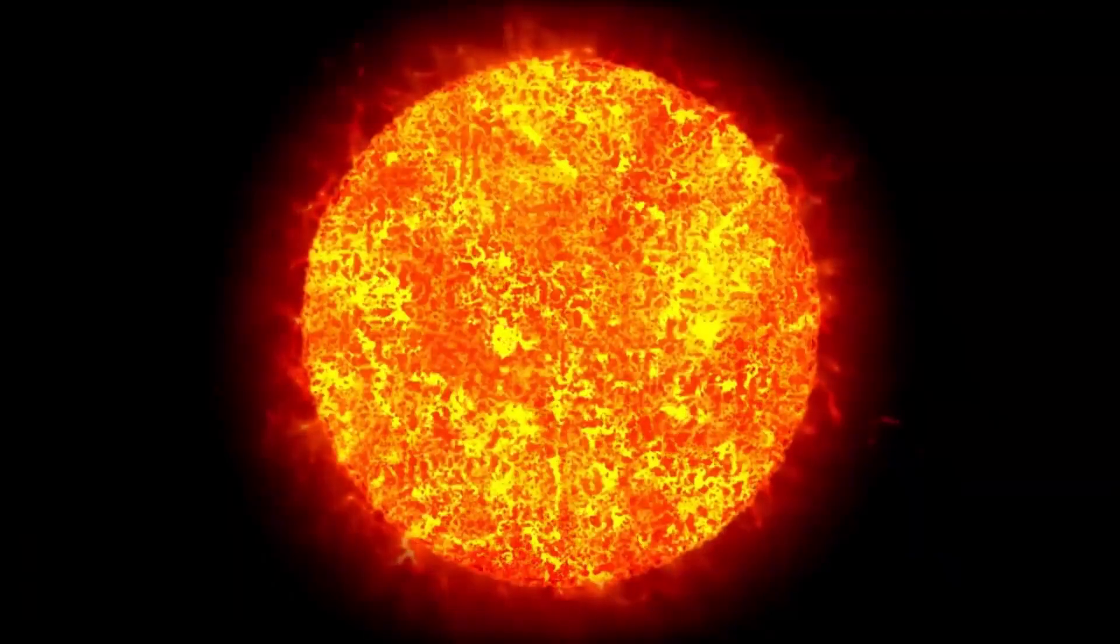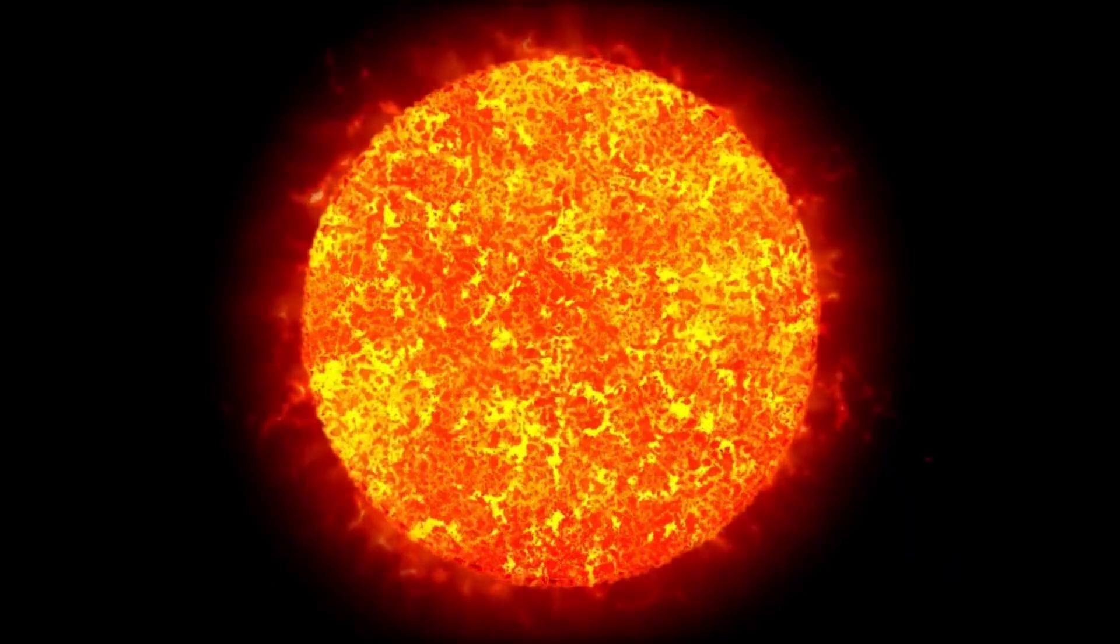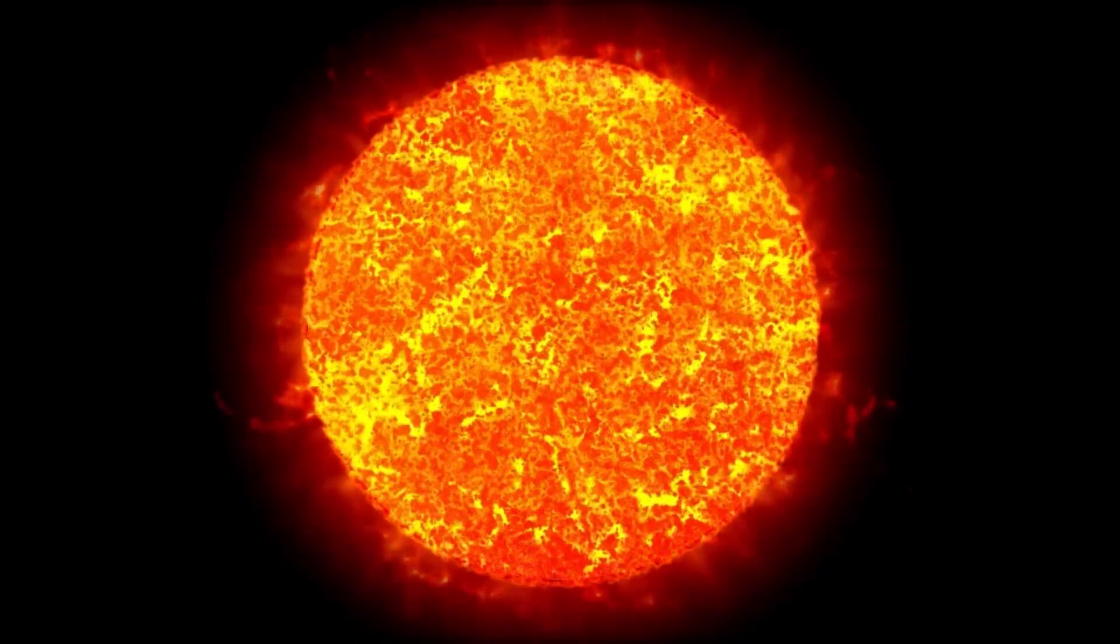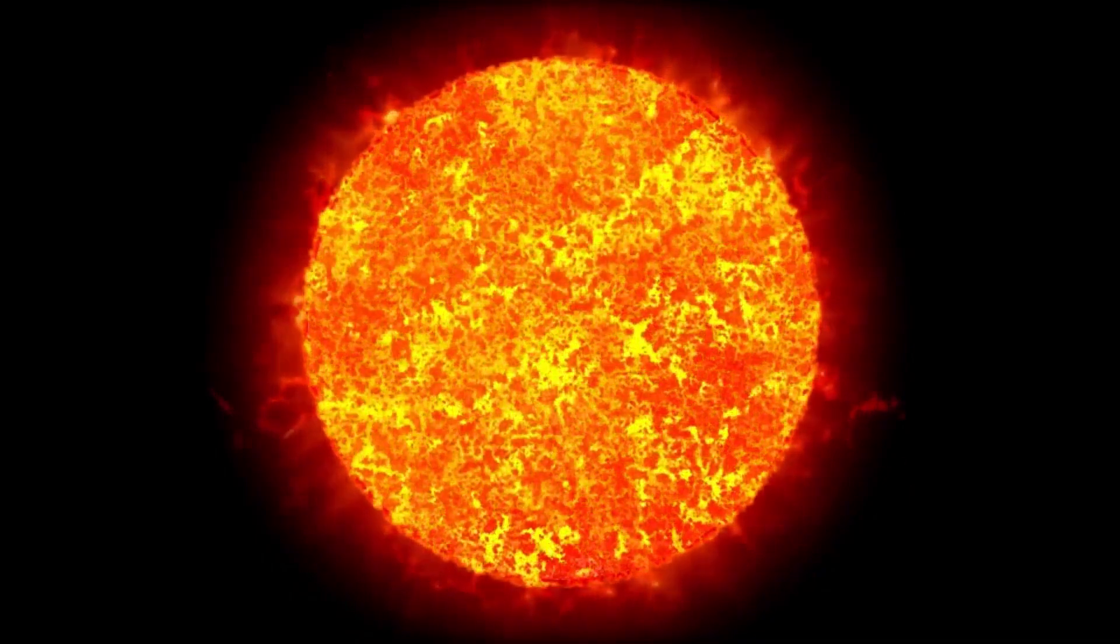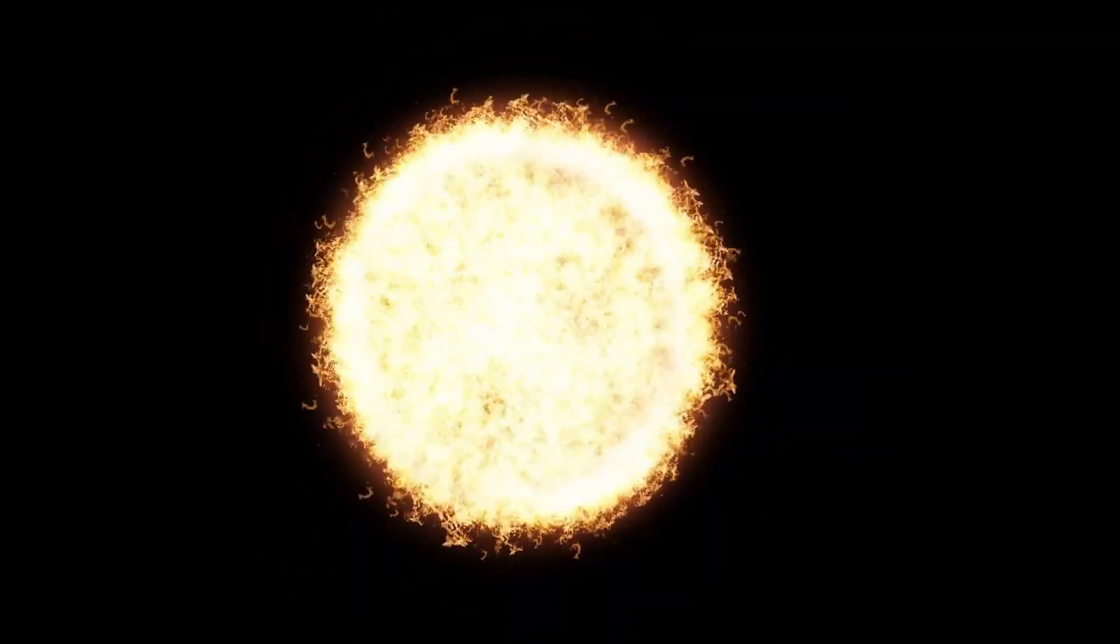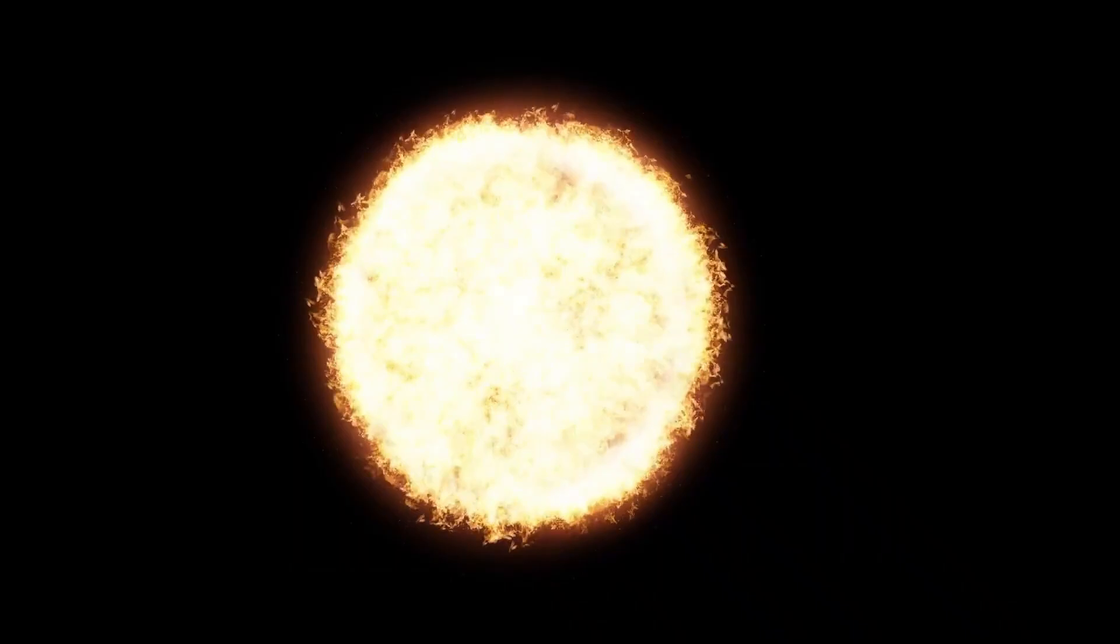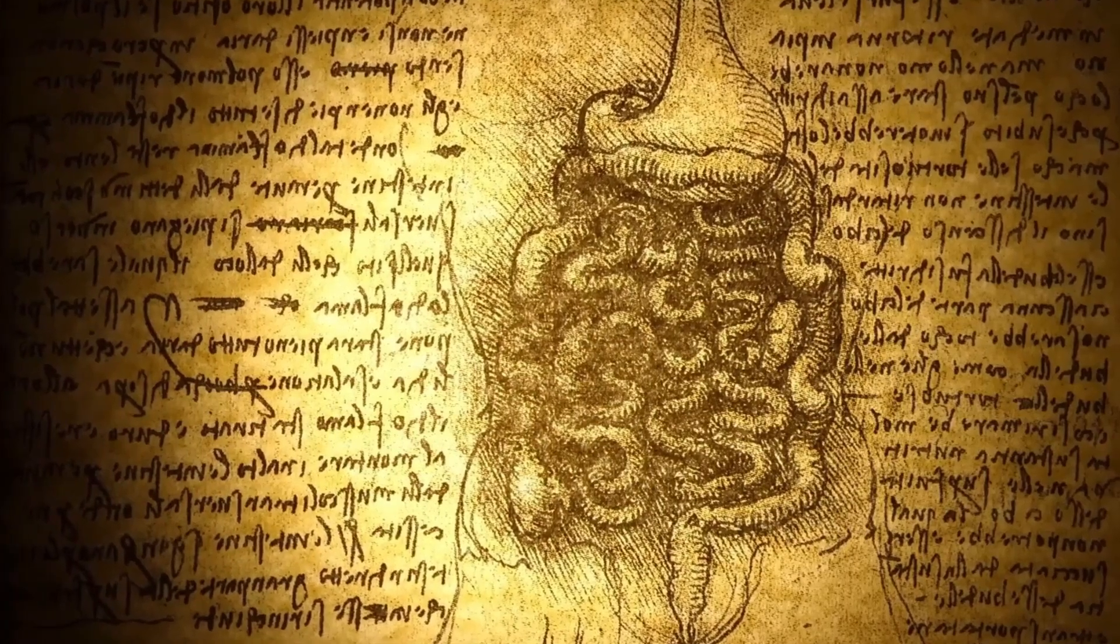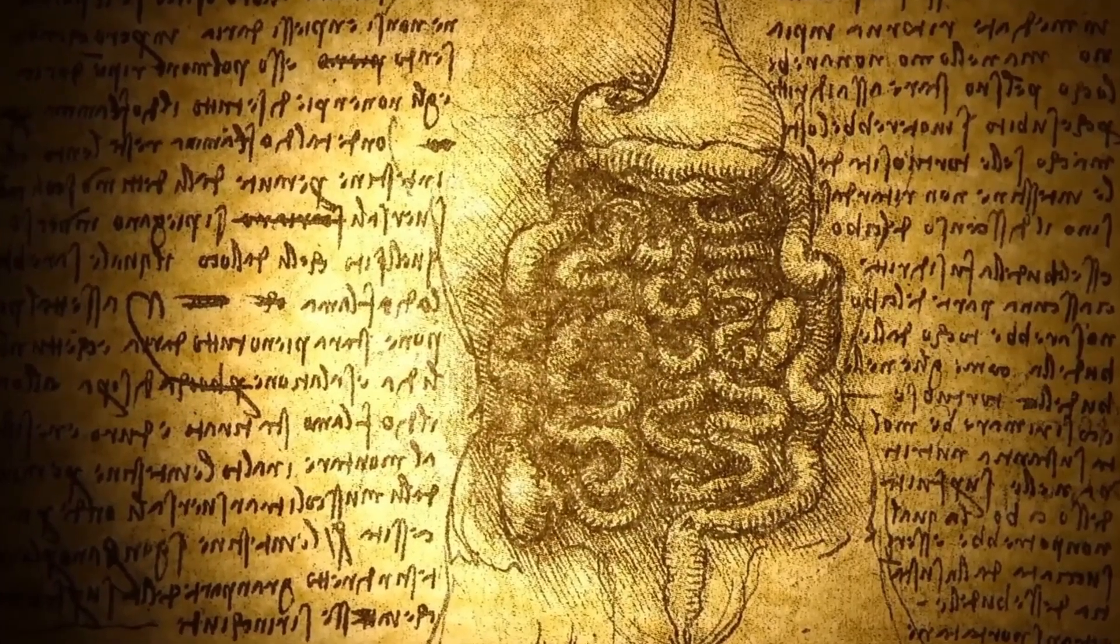which is significantly larger and more numerous than the sunspots on the Sun. These star spots can affect the overall brightness of the star and cause variations. As the spots move in and out of view, Betelgeuse's brightness can fluctuate. This is because the spots, being cooler, emit less light than the surrounding gas,